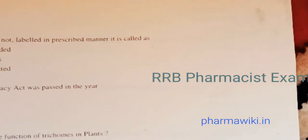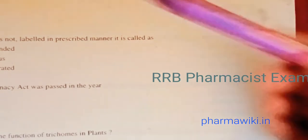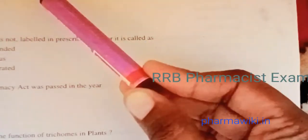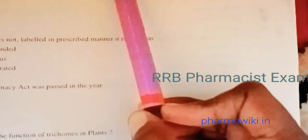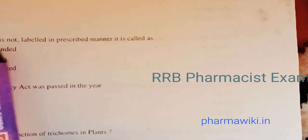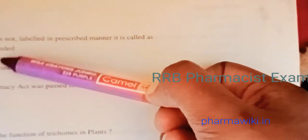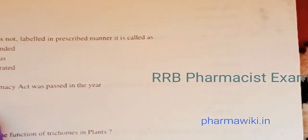Question 29: Opium has been under legislative control since 1857. Question 30: If a drug is not labeled in the prescribed manner, it is called misbranded — not spurious or adulterated. Question 31: The Pharmacy Act was passed in the year 1948.